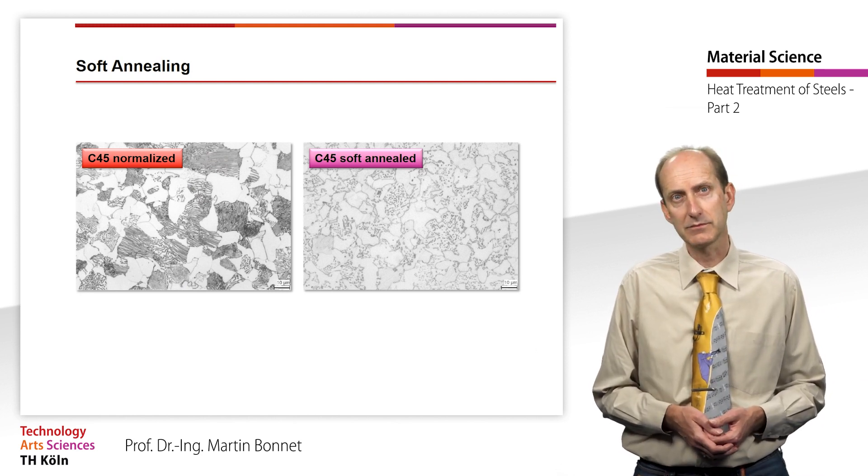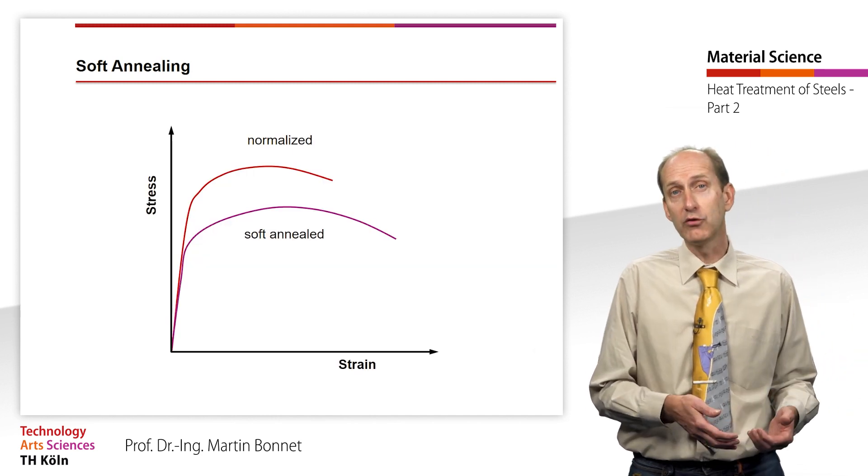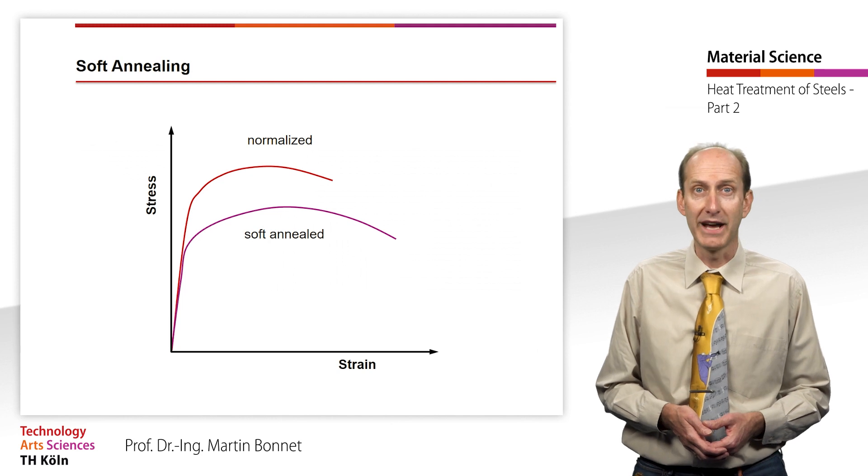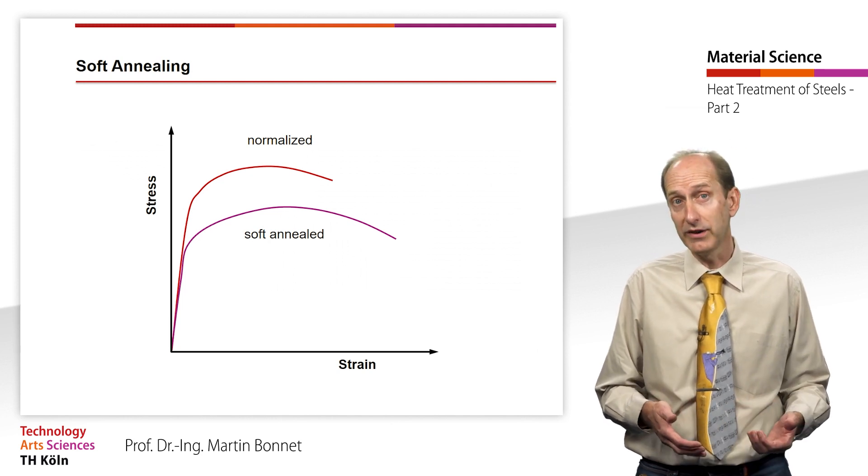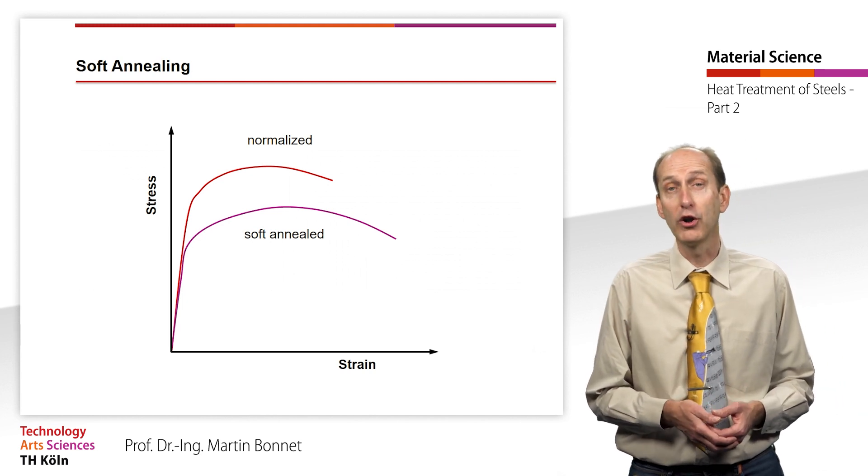The cementite lamella have formed into grains, which are finely dispersed in the ferrite. As roughly sketched here, the decreasing hardness is accompanied by a decrease in strength. However, the toughness also increases.